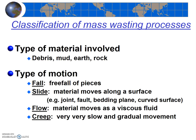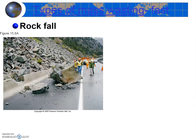Next we're going to look more closely at some specific types of mass wasting — different types of falls, slides, flows, and creep. Falls are the simplest and fastest of the different types of mass wasting. Generally the material will be a rock, so they're called rock falls. Check out the photo here — here's a rock, and it fell: a rock fall. What do you think the trigger for this event was?